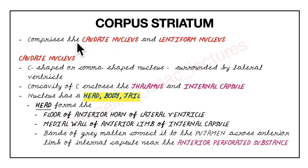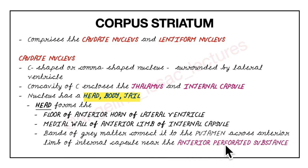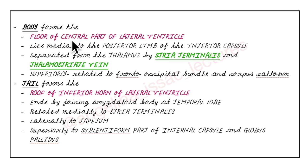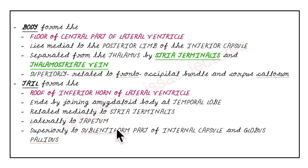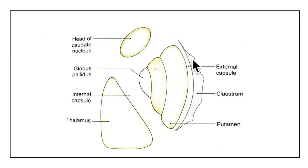To concise the points under corpus striatum: the caudate nucleus is a C-shaped nucleus surrounded by the lateral ventricle, enclosing the thalamus and internal capsule, with a head, body, and tail. The head forms the floor of the anterior horn and the medial wall of the anterior limb of the internal capsule, with grey matter bands connecting to the putamen near the anterior perforated substance. The body forms the floor of the central lateral ventricle, lying medial to the posterior limb of the internal capsule, separated from the thalamus by the stria terminalis and thalamostriate vein. The tail forms the roof of the inferior horn and joins the amygdaloid body at the temporal lobe.